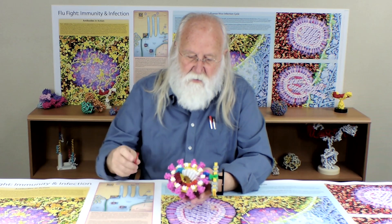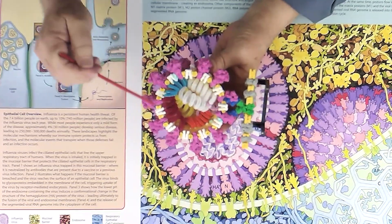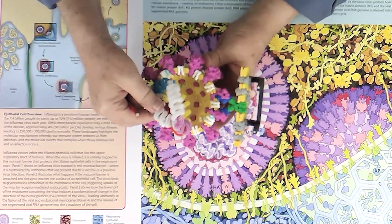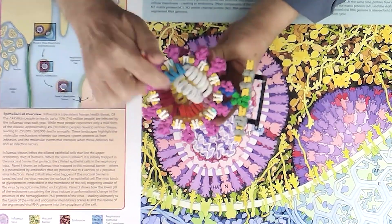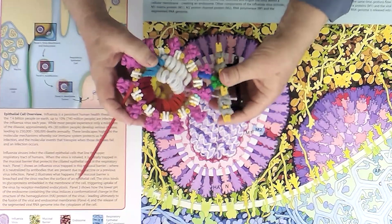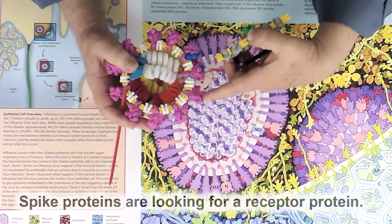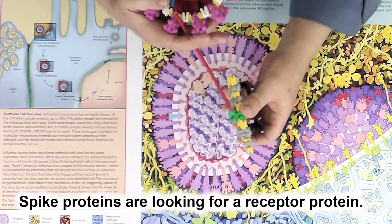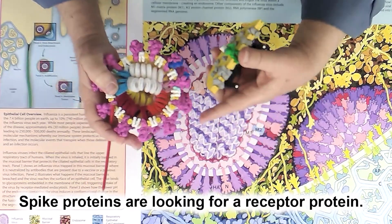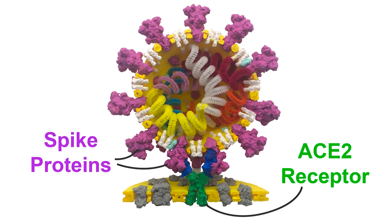Let me go over that again with this model you've seen before. We have a yellow membrane shell of the coronavirus. Inside that membrane shell is the single RNA genome. On the outside of this membrane there are these magenta colored spike proteins, and the key to this infection process is that these spike proteins are looking for a receptor protein on the surface of the cell. These spike proteins are looking for a green ACE2 protein — that's its so-called receptor.